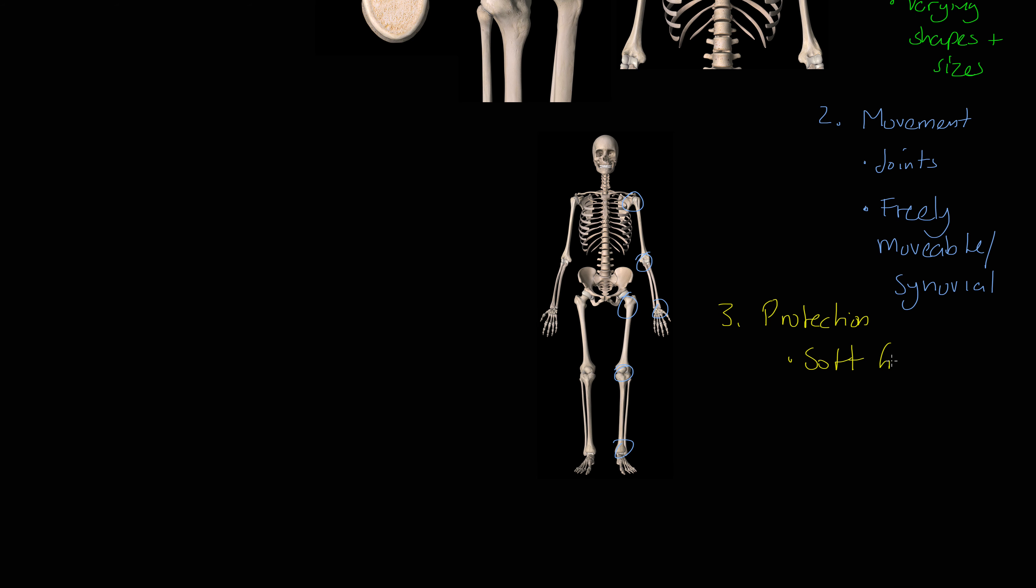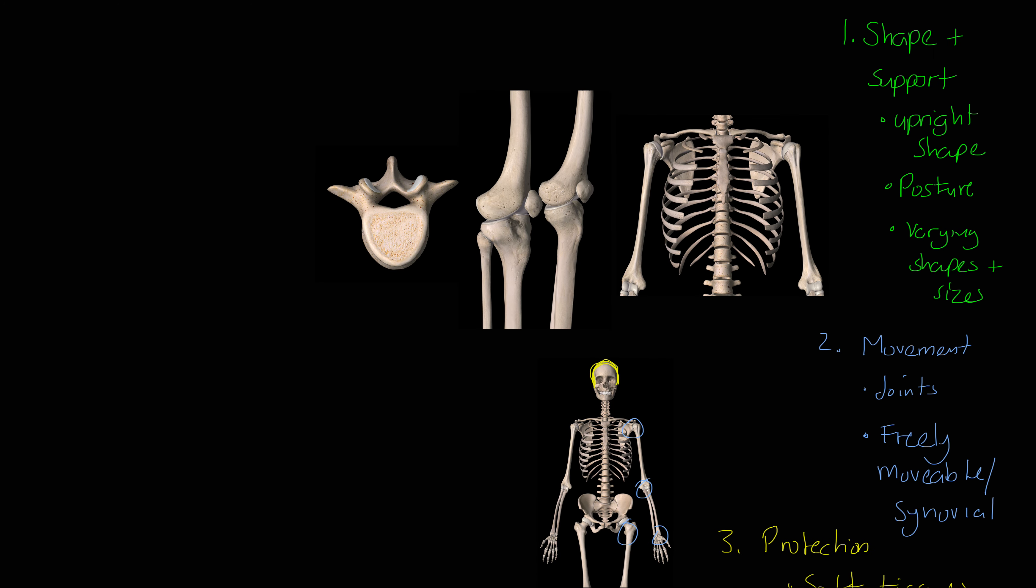Let's look at some examples. We have the cranium, the old bonce, the big bony thing on our head that protects the cranium, the soft tissue of the brain inside. We've got the ribs and the sternum protecting the soft tissue of the chest or the thoracic cavity.